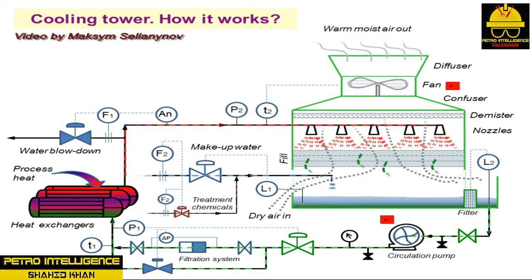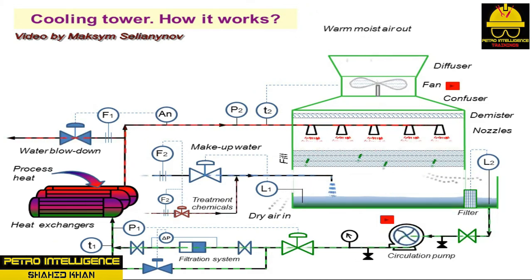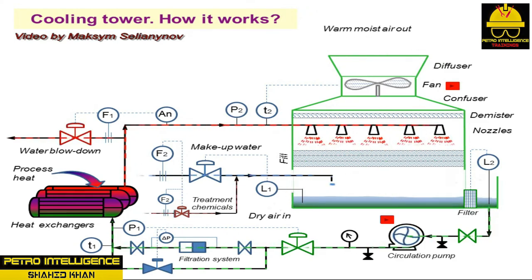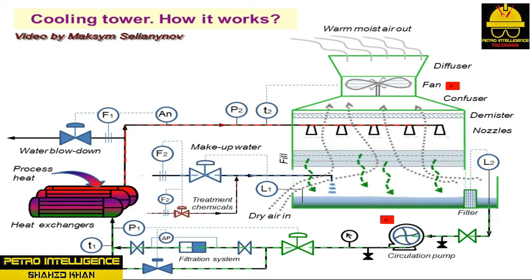Most towers develop significant draft or air movement due to design or air density differences. Drift eliminators prevent water from being blown or sucked out of the tower; this type of water loss is called drift loss or windage loss. Makeup water is added to replace water that has been lost by evaporation or blowdown. Induced draft cooling towers use fans to pull air out of the system, while forced draft cooling towers use fans to push air in.